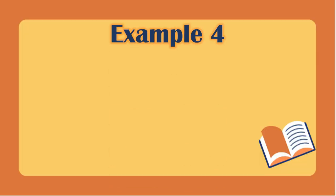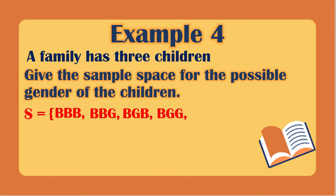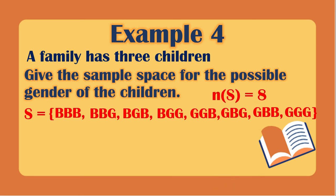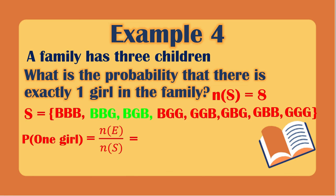Example 4: A family has 3 children. The sample space for possible genders is: BBB, BBG, BGB, BGG, GBB, GBG, GGB, and GGG — giving a total of 8 outcomes. What is the probability that there is exactly one girl? Looking at the sample space, we have BBG, BGB, and GBB — 3 favorable outcomes over 8. So the probability is 3/8.